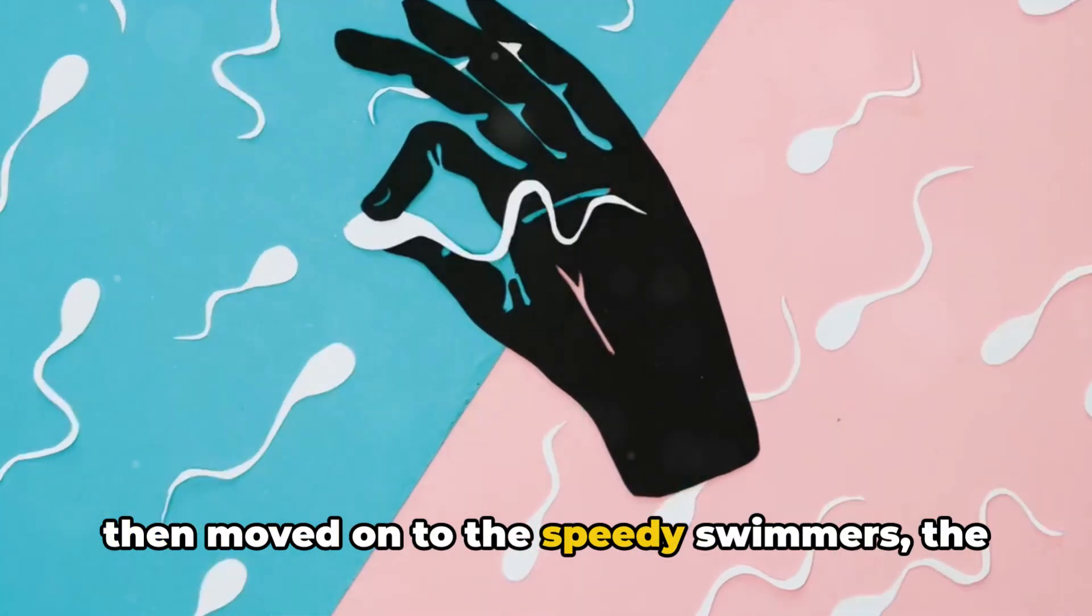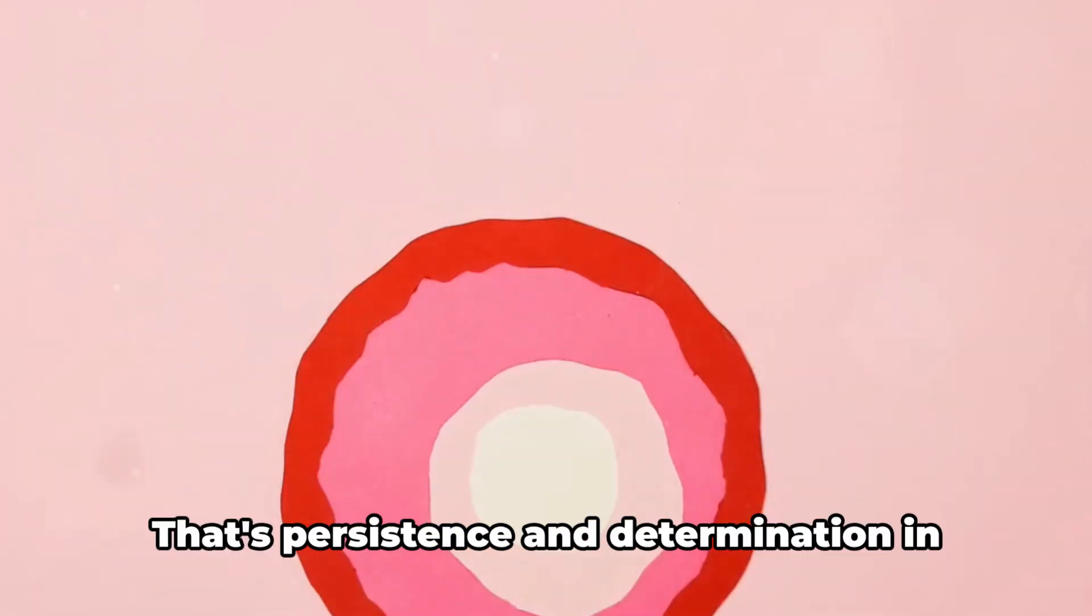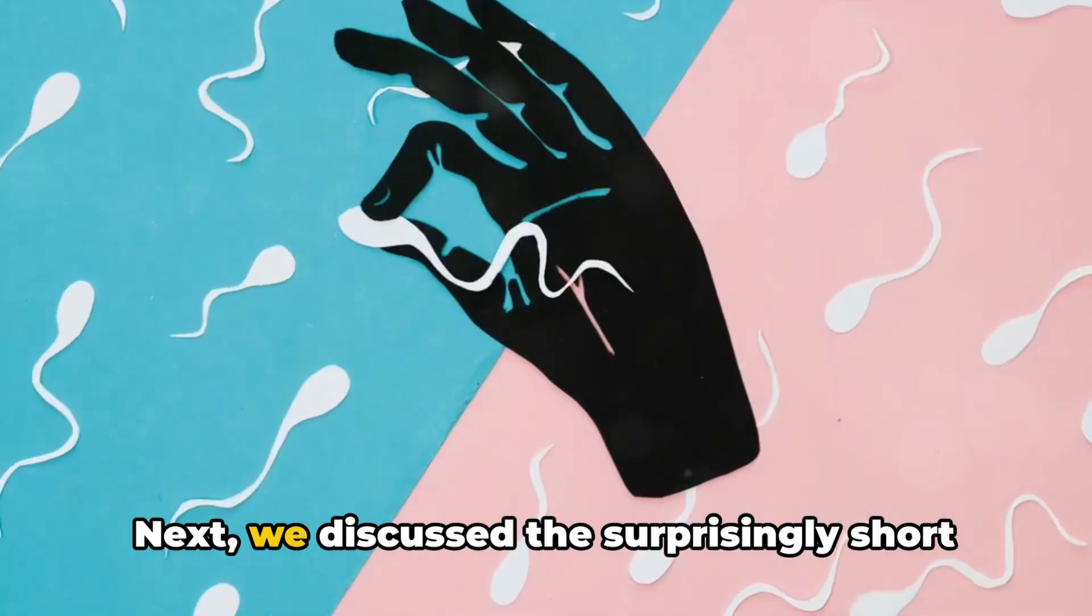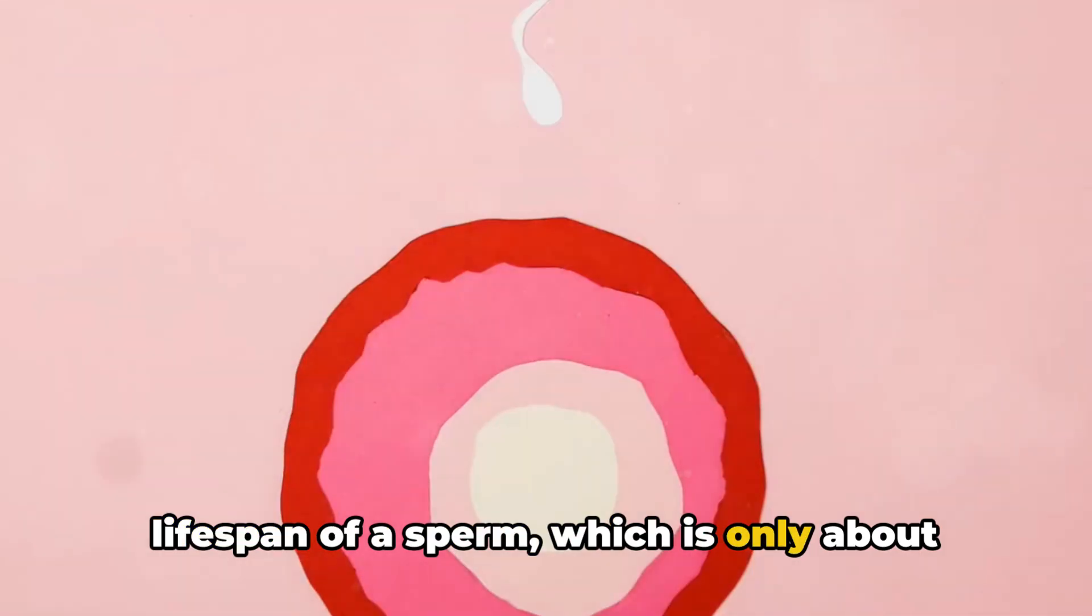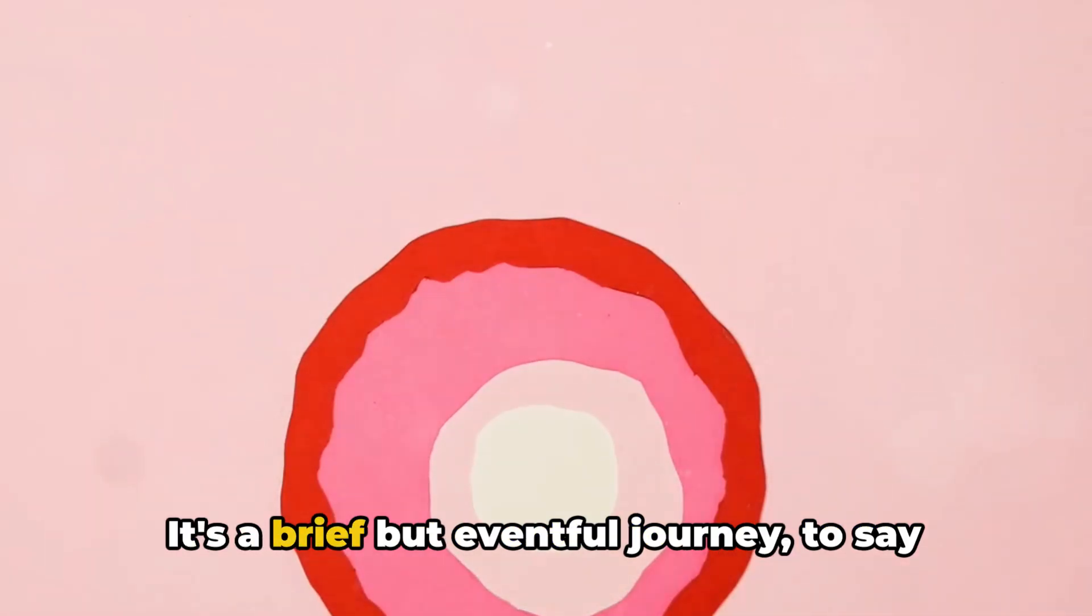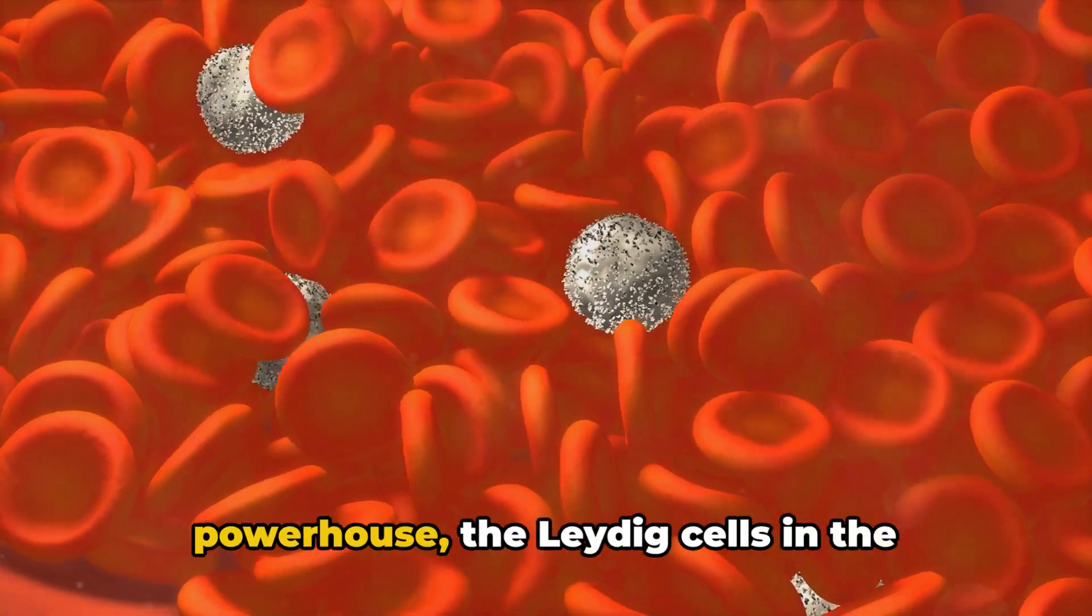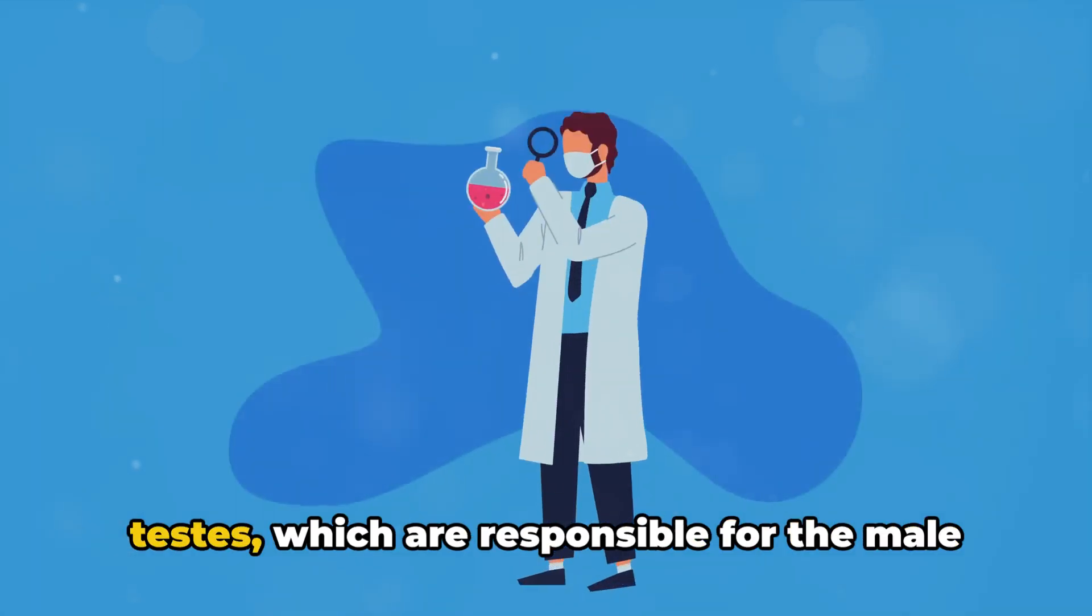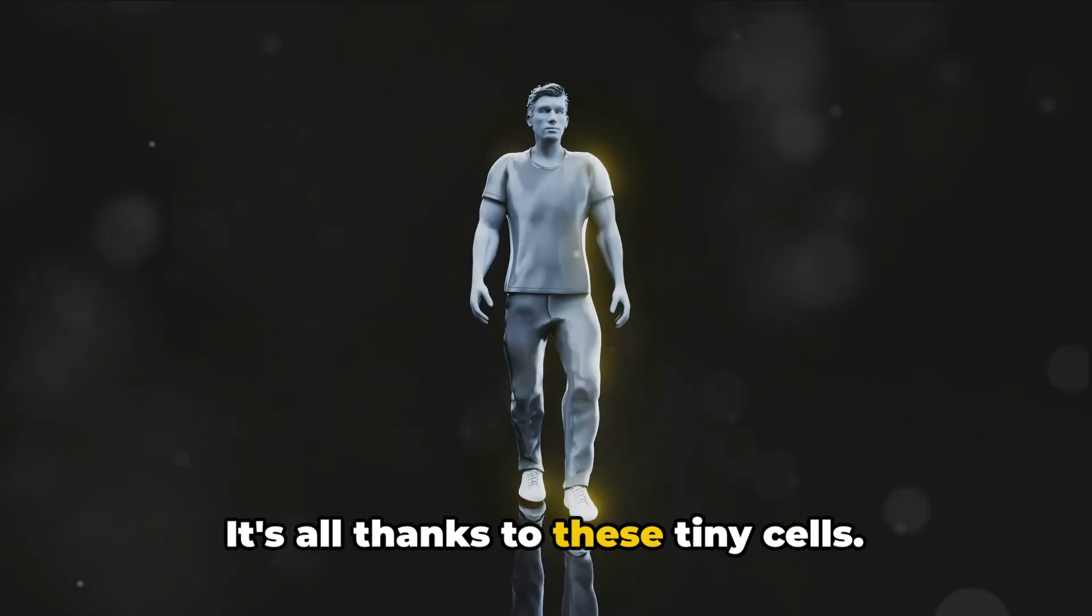We then moved on to the speedy swimmers, the sperm cells, which can travel up to 8 inches per hour. That's persistence and determination in the microscopic world. Next, we discussed the surprisingly short lifespan of a sperm, which is only about two months from creation to ejaculation. It's a brief but eventful journey, to say the least. We also highlighted the testosterone powerhouse, the Leydig cells in the testes, which are responsible for the male characteristics we see during puberty and beyond. It's all thanks to these tiny cells.